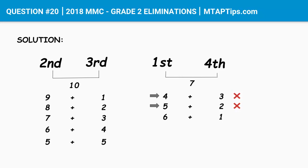The condition where the first monkey ate 5 bananas is also false. Let's try the last option: the first monkey ate 6 bananas while only 1 for the fourth monkey. Could the second and third monkey have eaten 9 and 1? That cannot be because 9 is still more than 6. Same with 8 and 2, 7 and 3, 6 and 4. But wait — 5 and 5? That's less than 6. So the condition where the first monkey ate 6 bananas and the fourth monkey ate 1 is the correct one, because the second and third monkey have only eaten 5 bananas each.